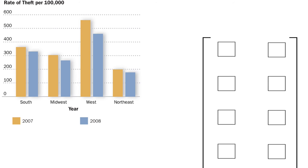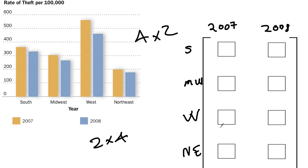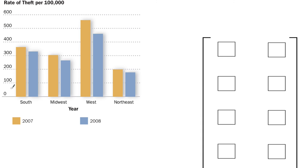Now interestingly, you also could have done it this way. You could have done it 2007, 2008, south, midwest, west, northeast. And then you put the data in here. So when you're going in the real world, you know, a 4 by 2 matrix, a 2 by 4 matrix, you could have organized it either way and you still have the same information. So you need to be able to take data from a table like that and go to a matrix like this one over here.